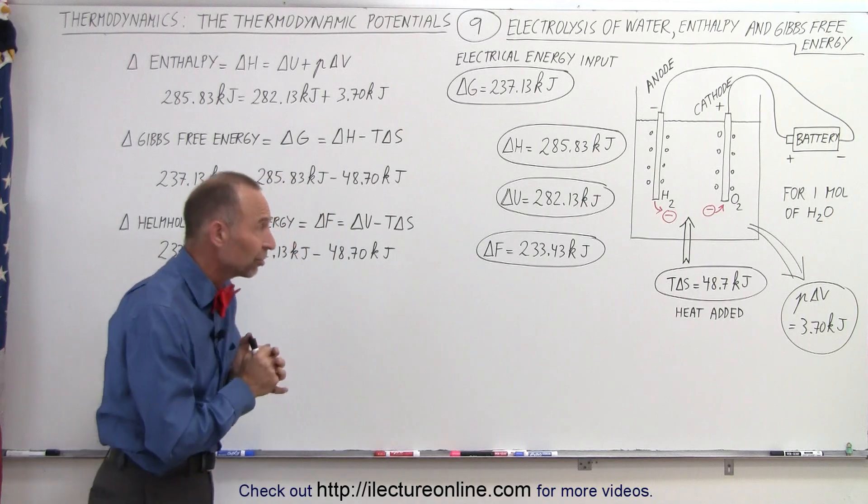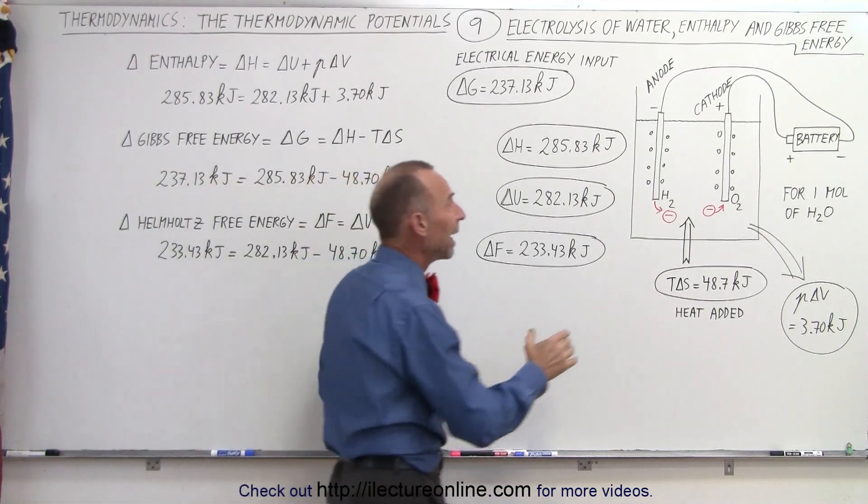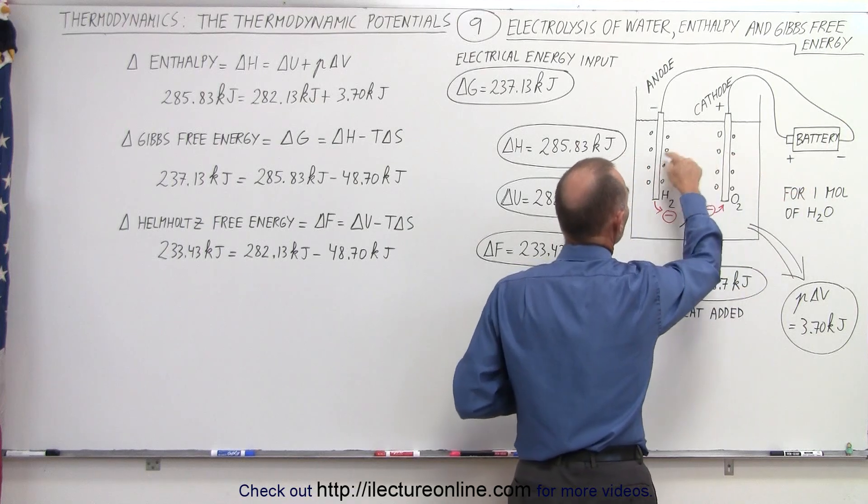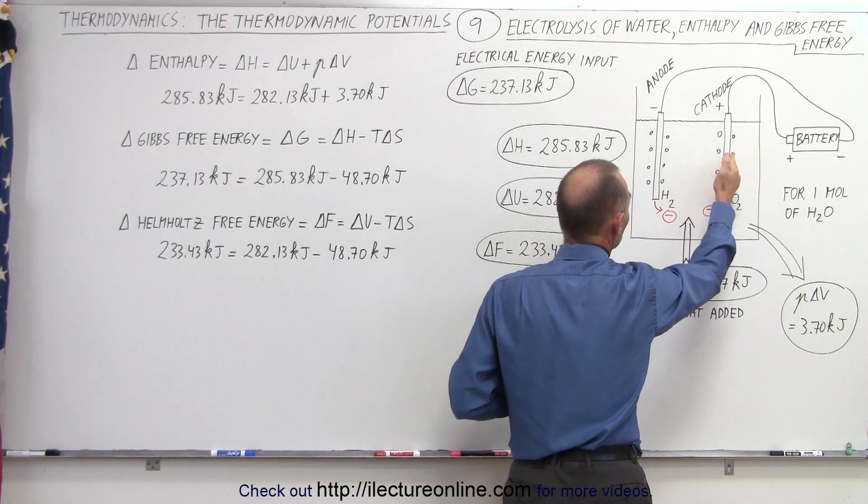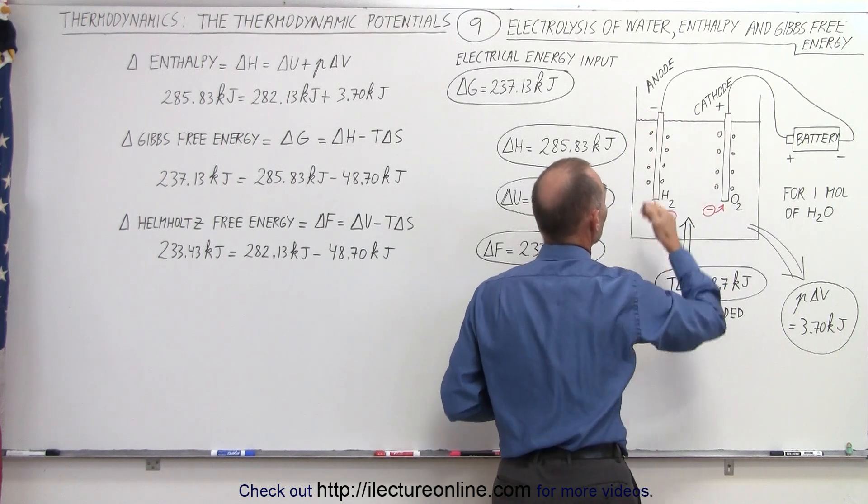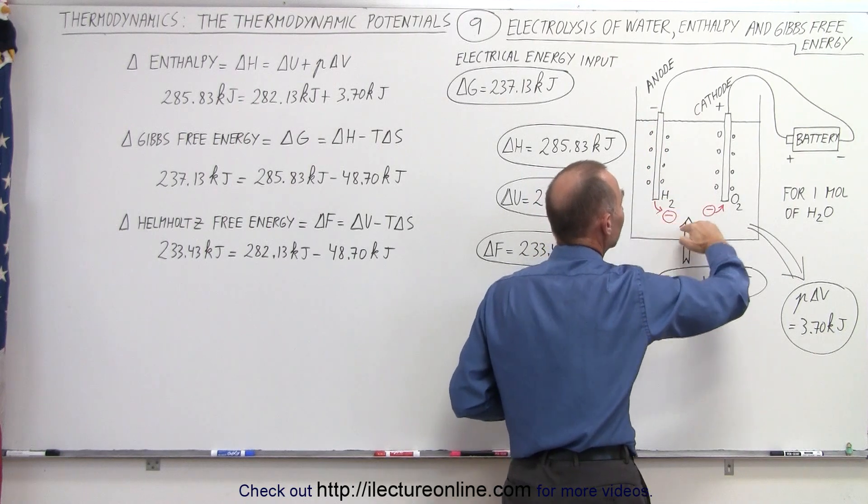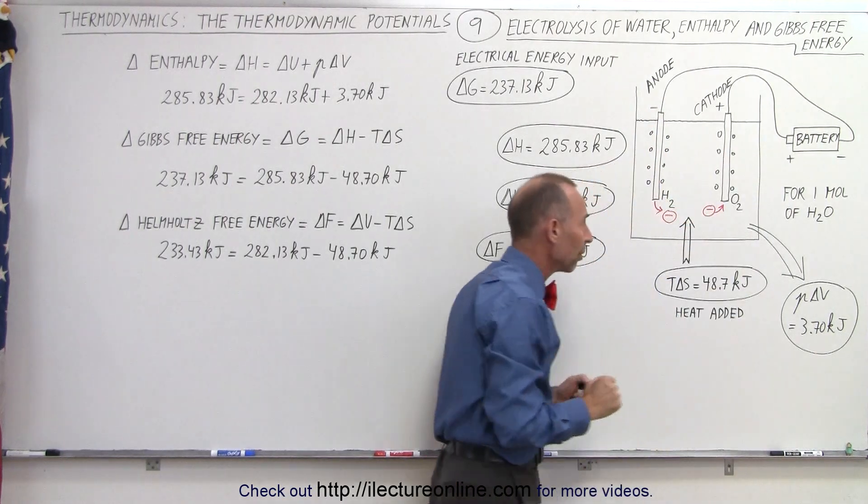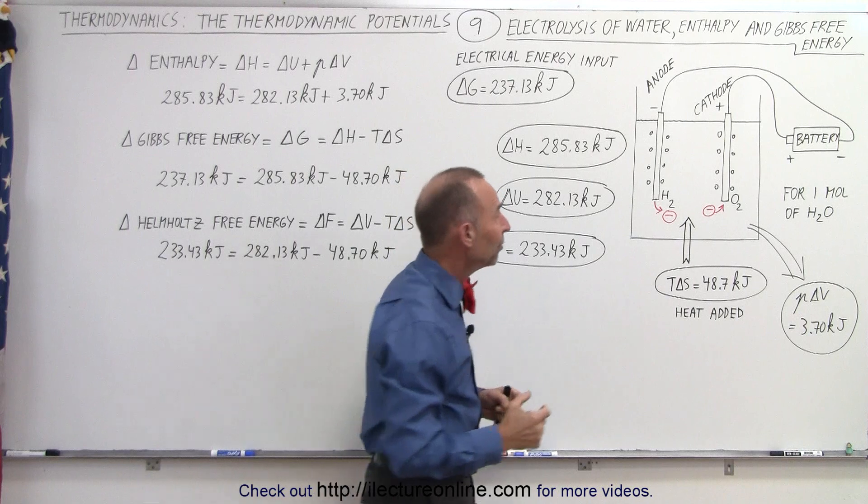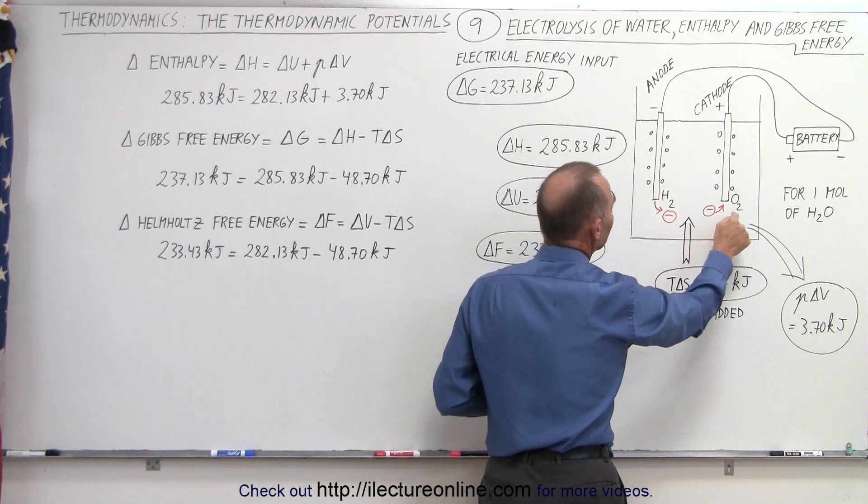In the electrolysis of water, we attach a battery to a couple of electrodes, one called the cathode, the other called the anode. The cathode is positively charged and the anode is negatively charged. The anode introduces electrons into the solution, the cathode absorbs electrons from the solution. What happens is, at the anode, hydrogen gas is produced.